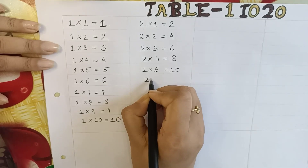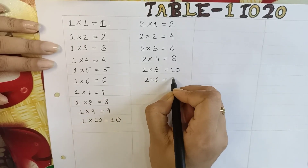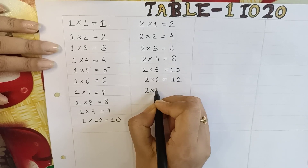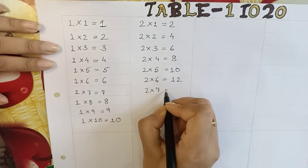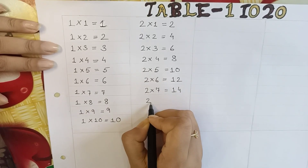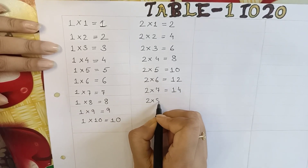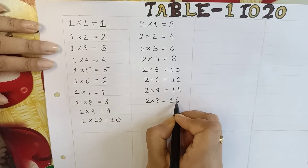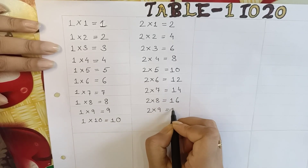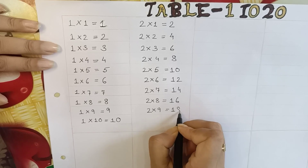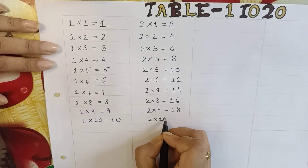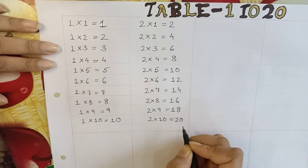2 into 6 is equal to 12. 2 into 7 is equal to 14. 2 into 8 is equal to 16. 2 into 9 is equal to 18. 2 into 10 is equal to 20.